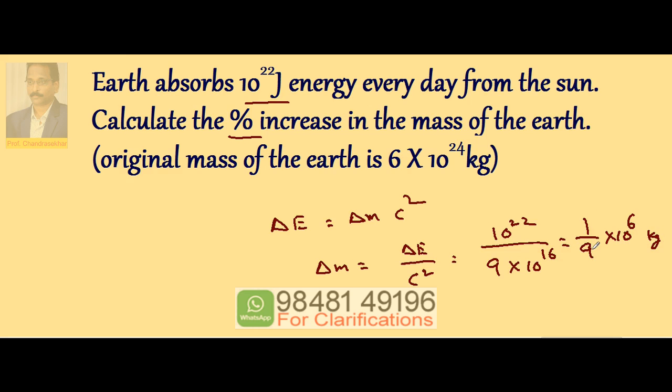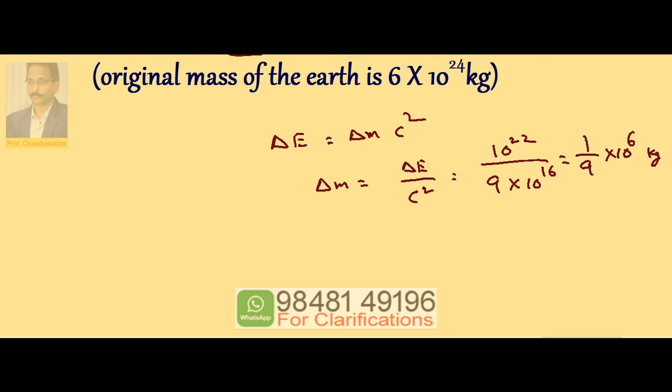This is the increase in mass of the earth. If the total energy is converted into mass, the earth's mass increases by 1 by 9 into 10 to the power of 6 kg.